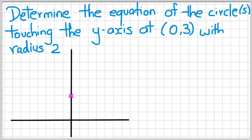Also notice in the question it says circles. This is because you could potentially have two circles. Your first circle could be this one on the right-hand side, and the second circle could be this red circle on the left-hand side. Both of them are touching the y-axis at (0,3) and they both have a radius of 2.